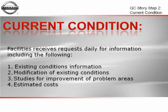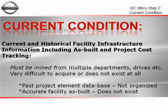Facilities receives requests daily for information including: number one, existing conditions information; number two, modification of existing conditions; three, studies for improvement of problem areas; four, estimated costs. Our current and historical facility infrastructure information, including as-built and project cost tracking, right now has to be mined from multiple departments, people, drives, and people's memories.